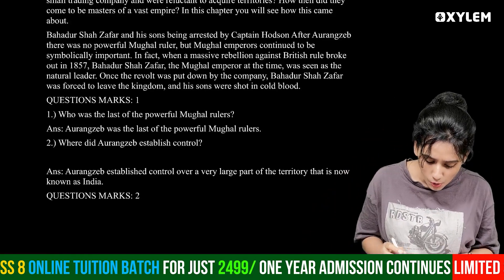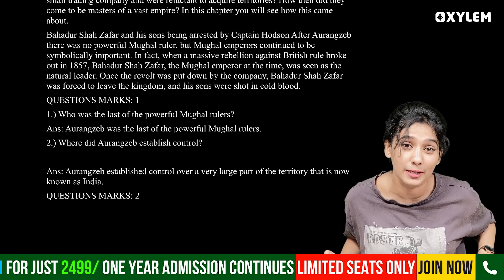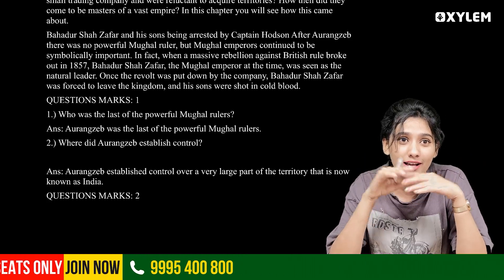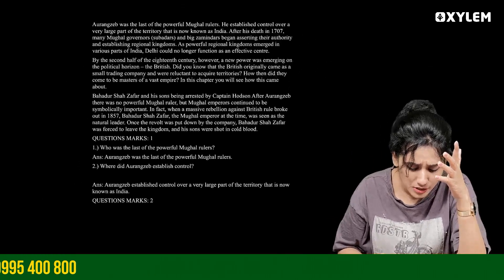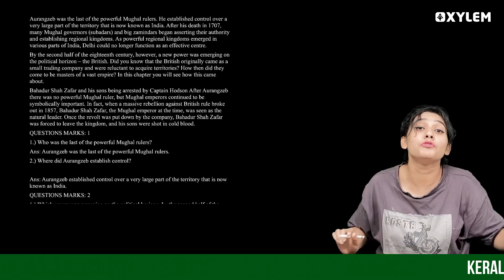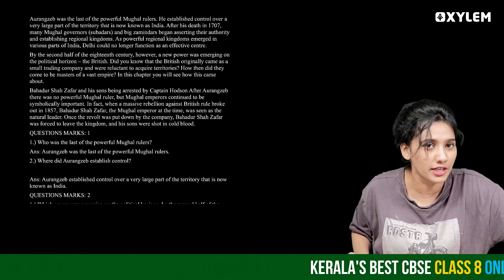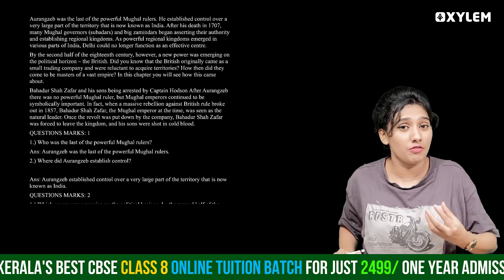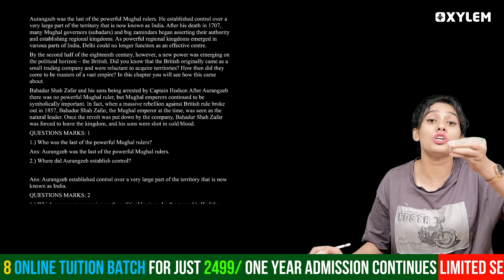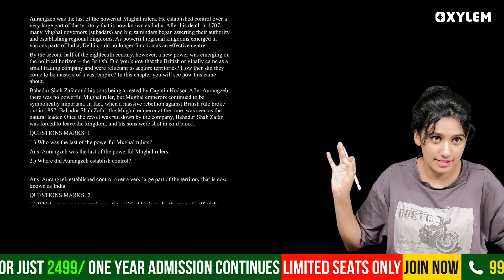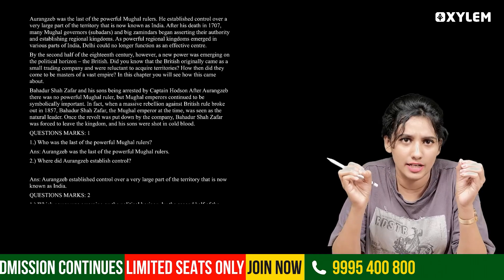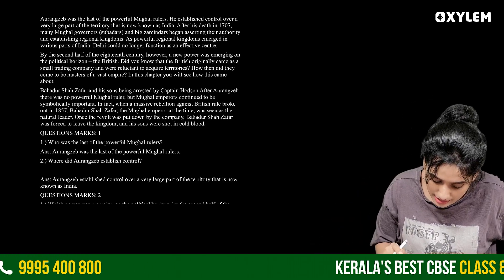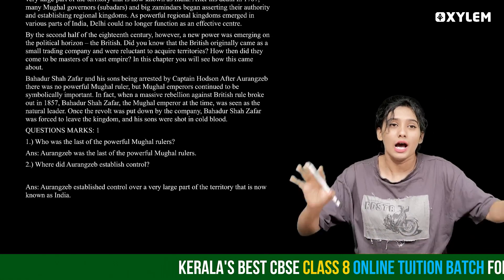First question: Who was the last of the powerful Mughal rulers? Let's look at the first paragraph of the passage. The answer is: Aurangzeb was the last of the powerful Mughal leaders.